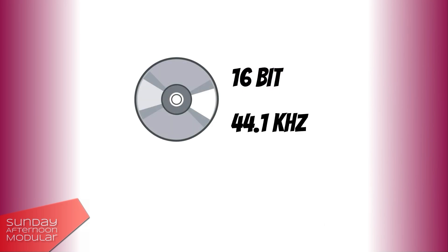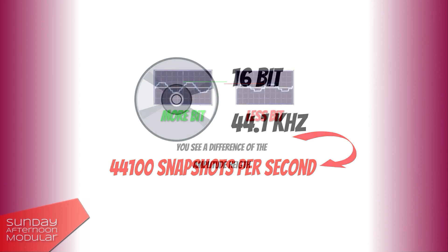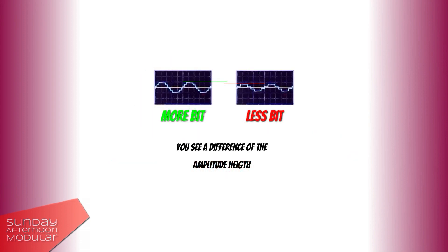The sample rate determines the number of snapshots taken to recreate the original analog sound wave. So the higher the sample rate, the more information of the analog sound wave can be stored. The bit depth determines how many amplitude values each of those snapshots contain.